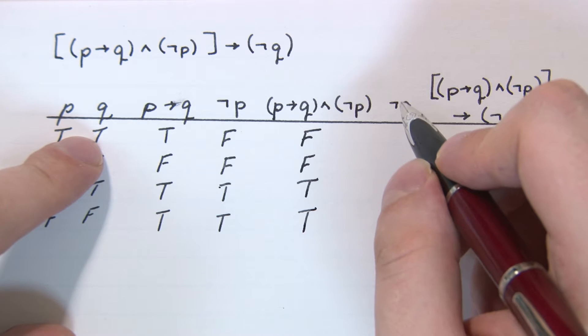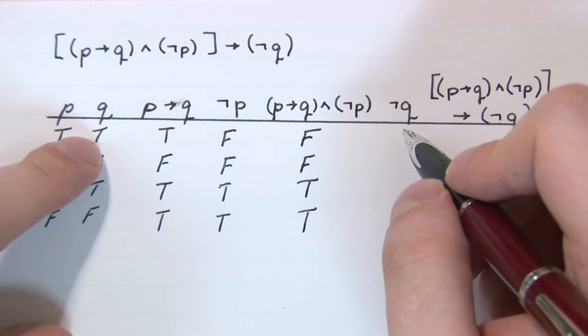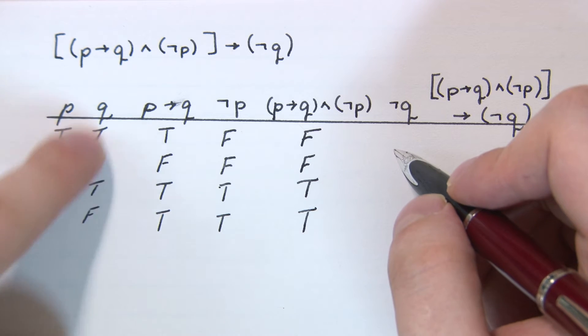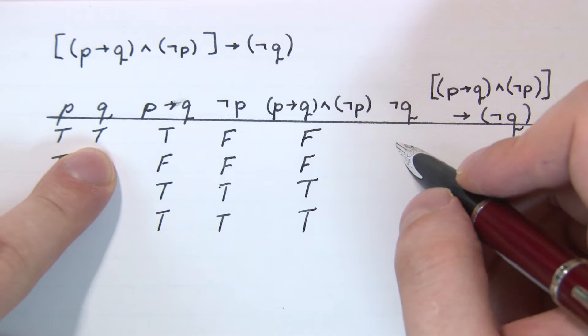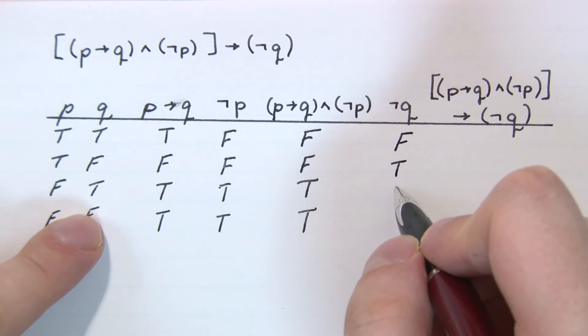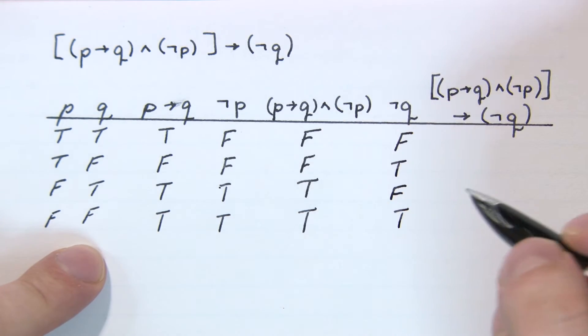Okay, now we have the negation of Q, so we need to take this column - the Q column - and flip the values. So we have false, true, false, true.